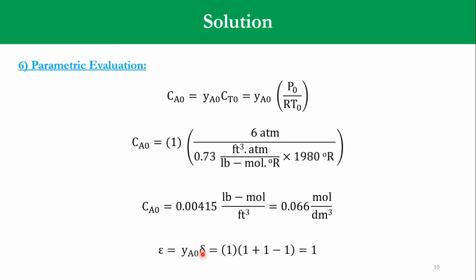Epsilon, YA0, Sigma and Sigma is number of moles of product minus number of moles of reactant. Now, the number of moles of product are 2, while that of reactant is 1. So, obviously, the answer will be 1. 1 for ethylene, 1 for hydrogen, these are added, minus 1 for ethane and, accordingly, YA0 is obviously 1. So, Epsilon is 1 in the system.